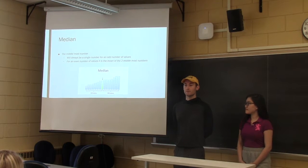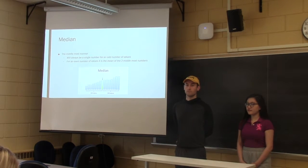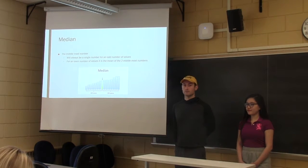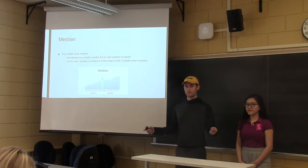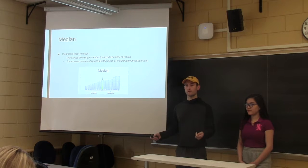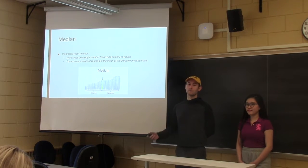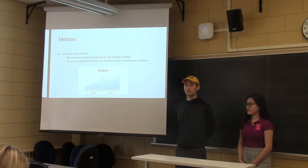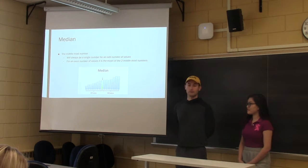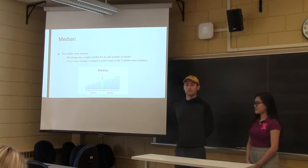And if there's an even number of observations or values in your set, then you have to take the average of the middle two most values. So say you have 6 values, you cross out the first and the sixth, and then the second and the fifth, and then you're left with the third and the fourth, and you sum them and then divide by 2, like the mean formula. And now Lynn's going to talk about a couple examples of the median.